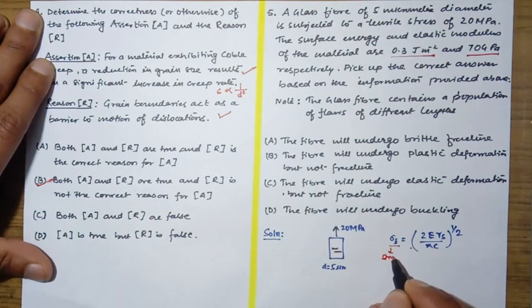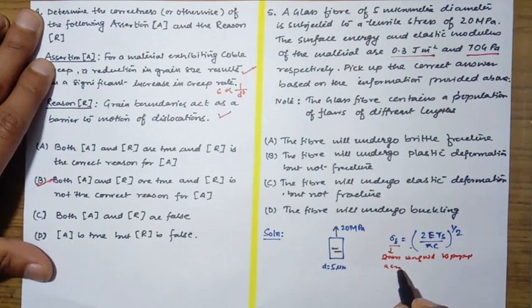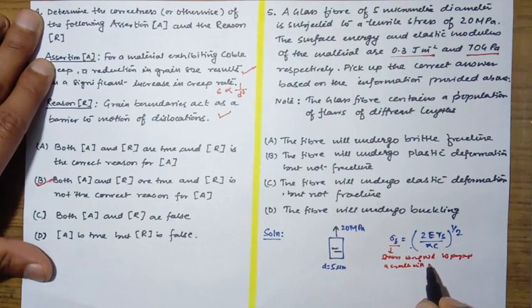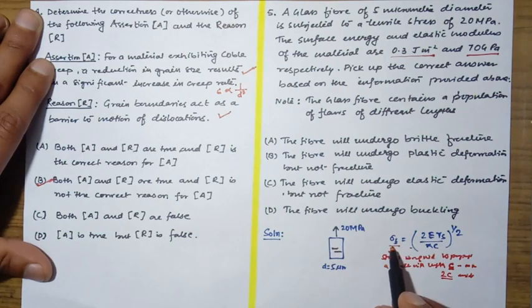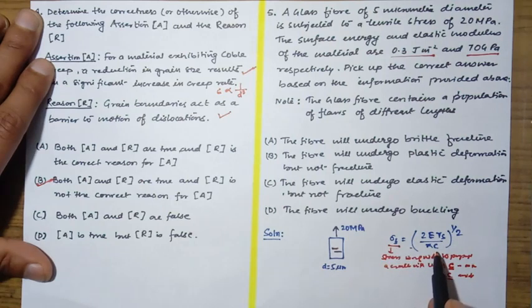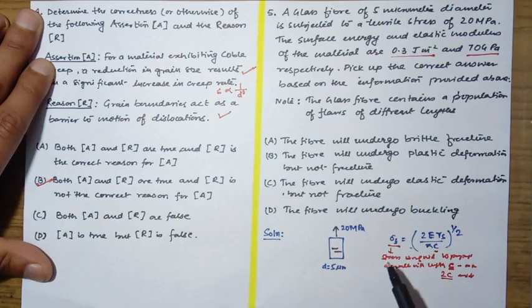This amount of stress is required to propagate a crack with length c. It will be c if it is on the surface and it will be 2c if it is in the inside. So this amount of stress is required to move a crack of size c. Now suppose the stress applied is 20 MPa, so for this 20 MPa there will be a crack size that the crack will propagate. We will try to calculate this crack length.